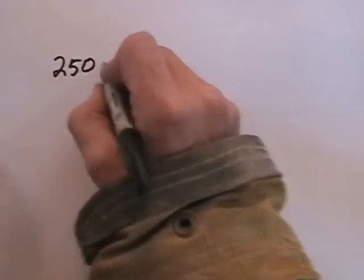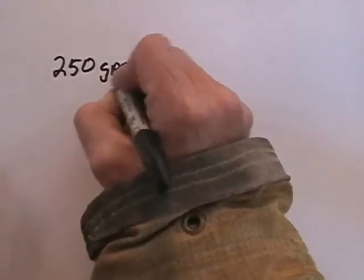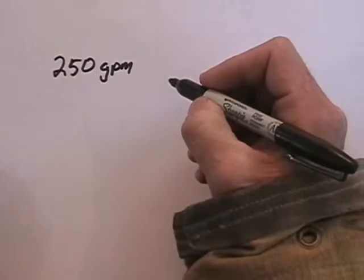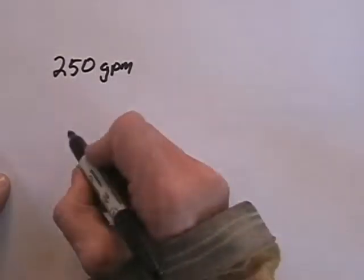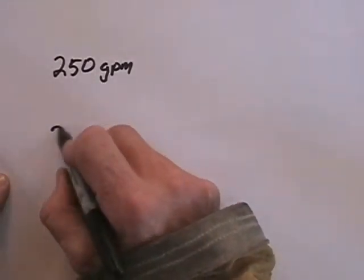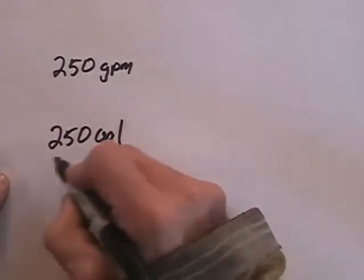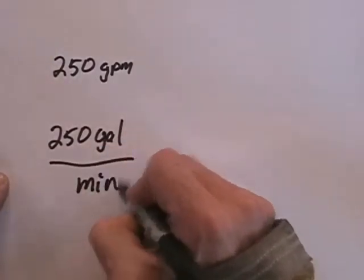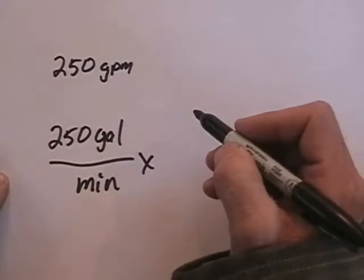If we're flowing 250 gallons per minute, it's usually written as 250 GPM. But we know that we can write it as a fraction as well by saying 250 gallons per minute. What we need to do is convert that to pounds.